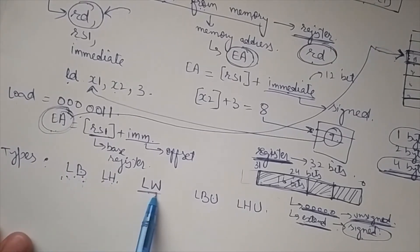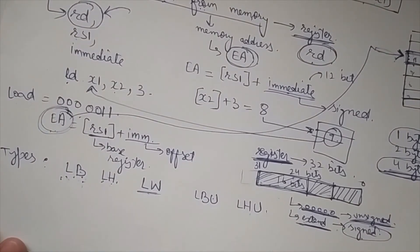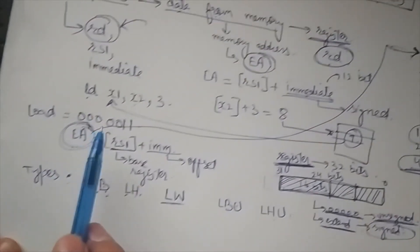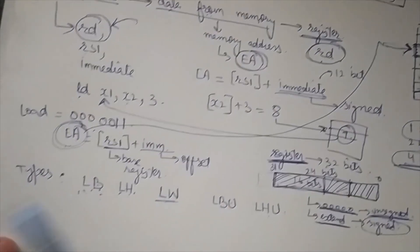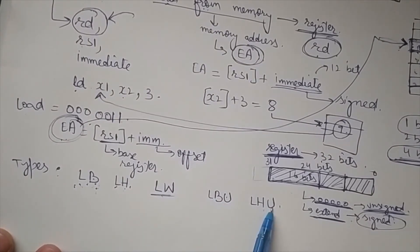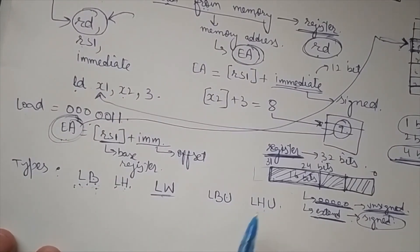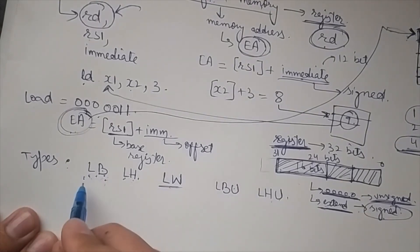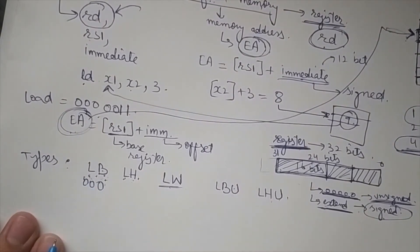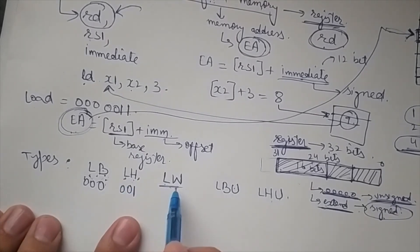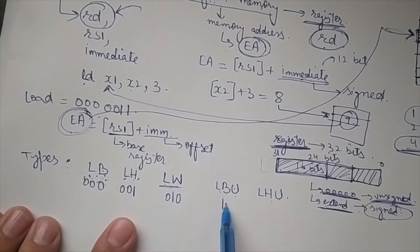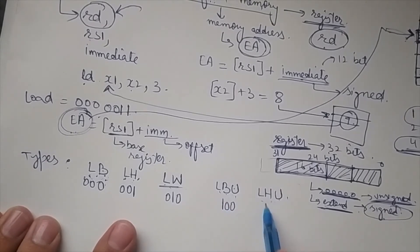These are five different types of load instructions in RISC-V. All load instructions share opcode 0000011. They are differentiated using func3: load byte is 000, load half word is 001, load word is 010, load byte unsigned is 100, and load half word unsigned is 101.